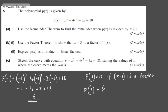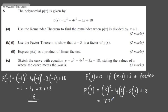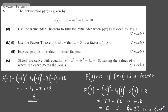We have 3³ = 27, minus 4 lots of 3² = 9, minus 3 lots of 3, plus 18. So we get 27 - 36 - 9 + 18. Now 18 and 27 are 45, minus 45, and this gives us 0. Therefore x - 3 is a factor. All we've done is evaluated p(3) and shown it equals 0.